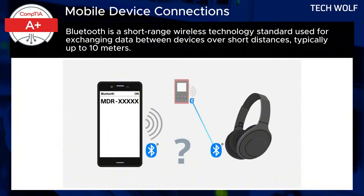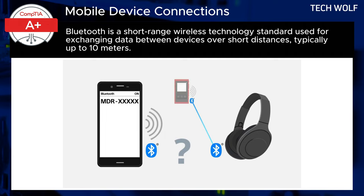Bluetooth is another wireless standard that enables short-range data sharing over a few meters. It connects mobile devices with peripherals such as wireless headphones, speakers, and keyboards, offering a cable-free, hands-free experience. Bluetooth supports various functions like file sharing, audio streaming, and voice commands, enhancing the usability of connected devices.